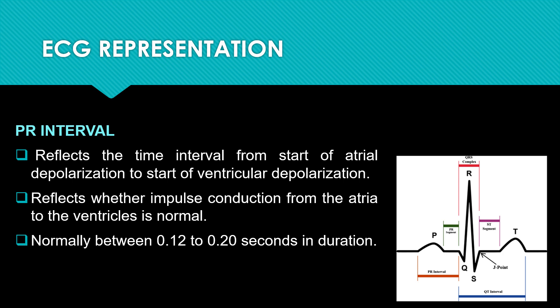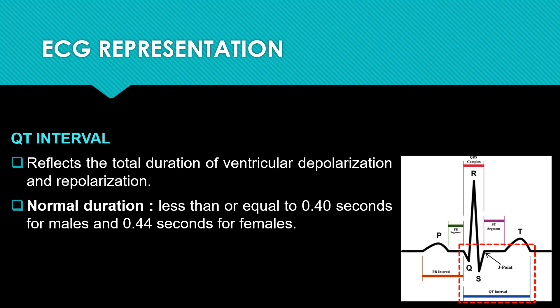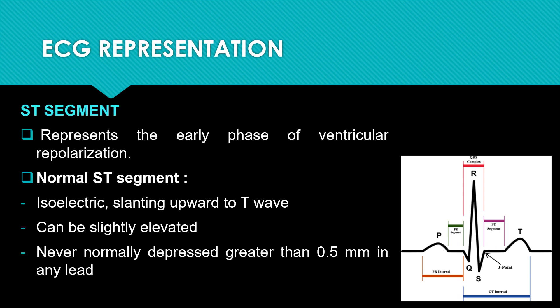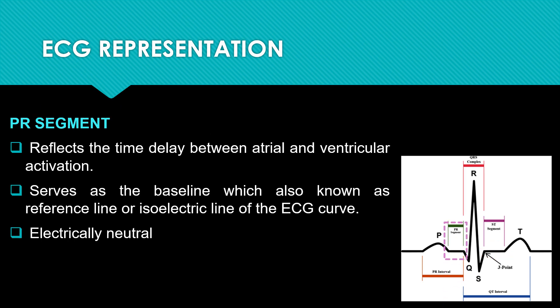The PR interval represents the time from the start of atrial depolarization to the start of ventricular depolarization, and also reflects the impulse conduction from the atria to the ventricles. The normal duration is between 0.12 to 0.20 seconds. The QT interval reflects the total duration of ventricular depolarization and repolarization, with a normal duration of less than or equal to 0.40 seconds for males and 0.44 seconds for females. The ST segment represents the early phase of ventricular repolarization and is normally isoelectric, slanting outward to the T wave, and will normally not depress greater than 0.5 mm in any lead. The ST segment also reflects the time delivered to the arterial activation of the ventricle, serving as the baseline or isoelectric reference line of the ECG curve, and is electrically neutral.